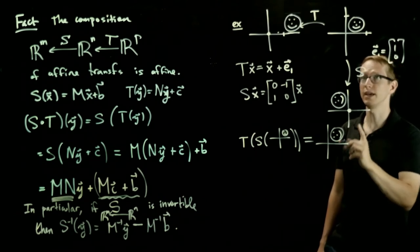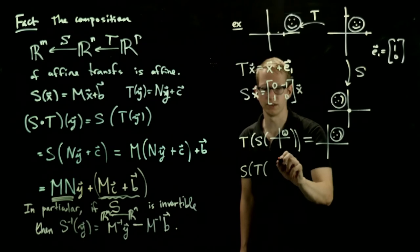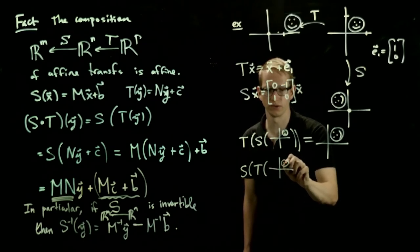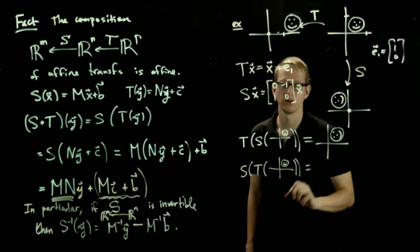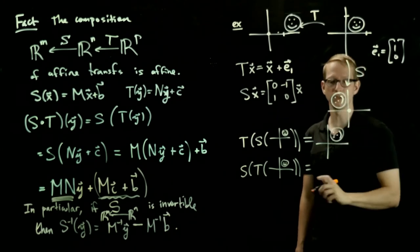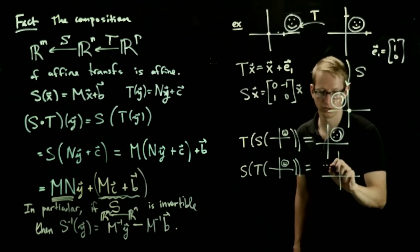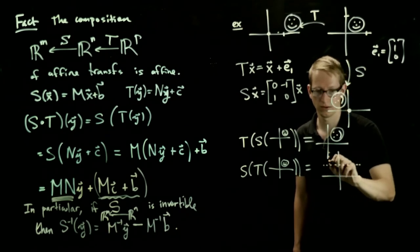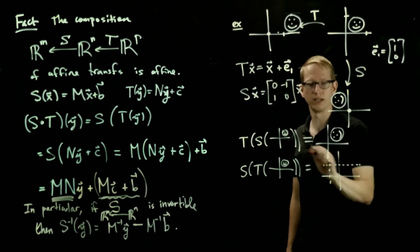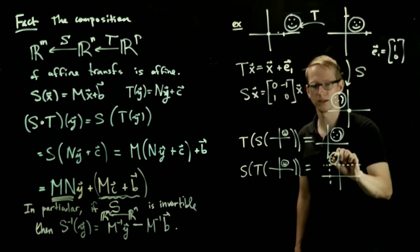But if instead we applied S after T to the same initial configuration, well, first we would translate, and then we would rotate by 90 degrees. That would look much, much different. So if I were to draw this as a unit grid, that face would now be in this box, rotated by 90 degrees. So it would look something like that.